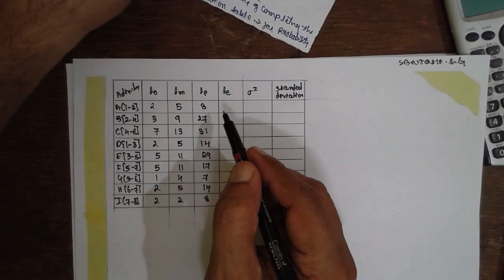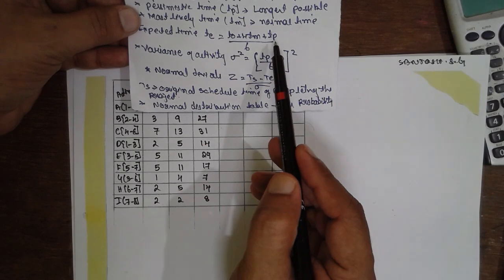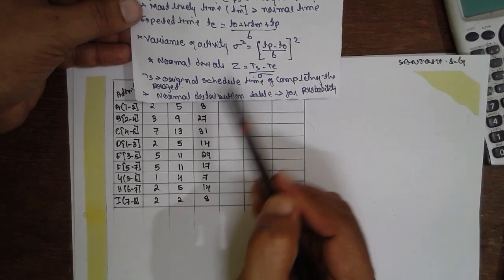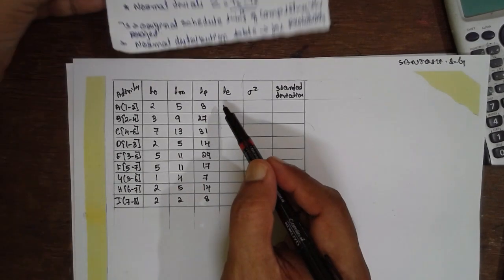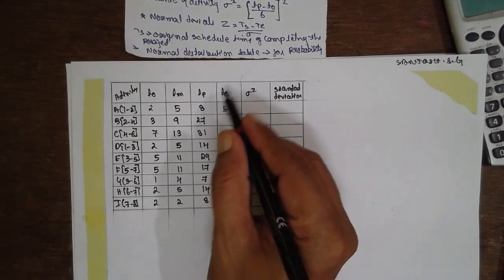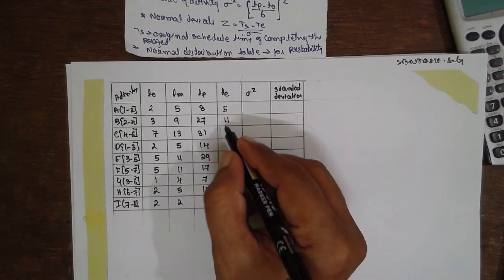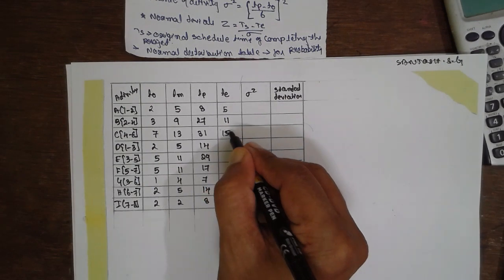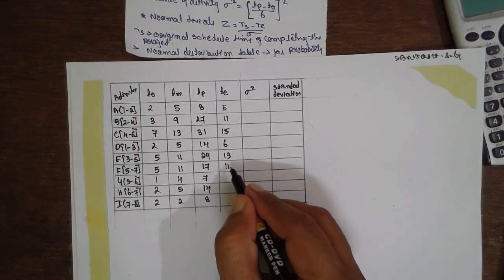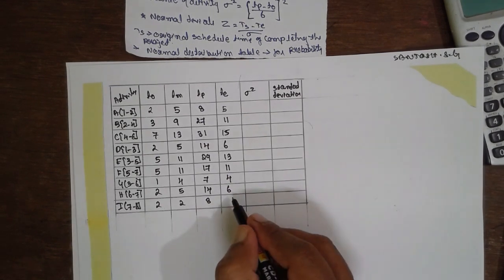How to obtain the expected duration: using the formula Te = (T0 + 4Tm + Tp) / 6. For activity A: (2 + 4×5 + 8) / 6 = 5. The expected time values for all activities are: 5, 11, 15, 6, 13, 11, 4, 6, 3.